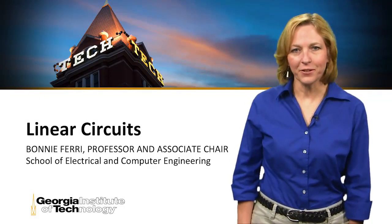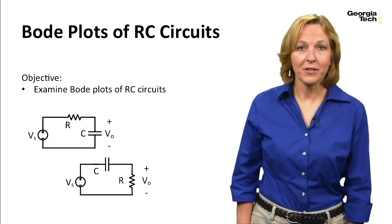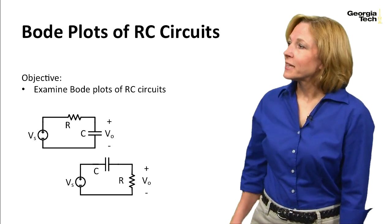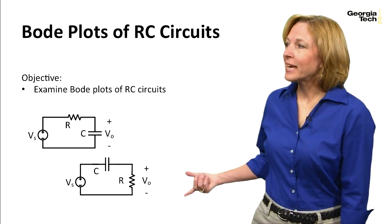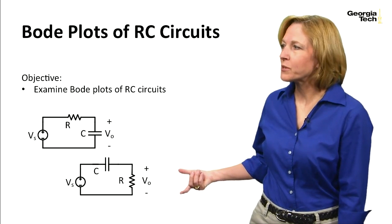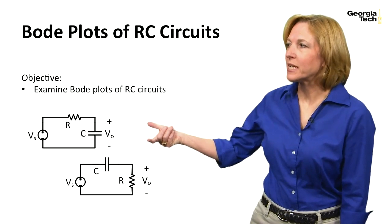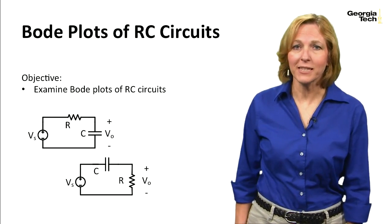Welcome back to Linear Circuits. This is Dr. Ferry. In this lesson, we will be looking at Bode plots of RC circuits. We'll be looking at two different circuits, this one and this one. The difference is where we're taking the output - here it's across the resistor and here it's across the capacitor. And it turns out it makes a big difference in what the Bode plot looks like of that circuit.